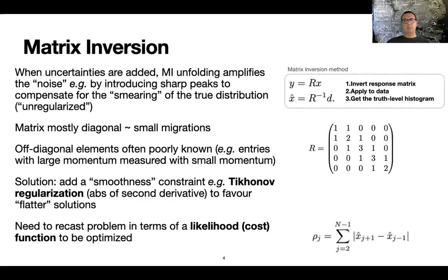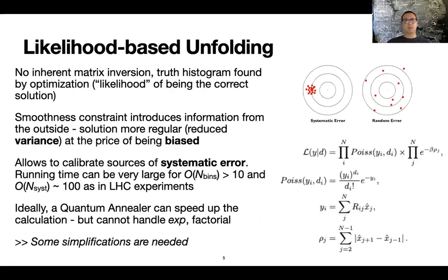So one possible solution is basically to add a regularization term that, for example, can be the absolute value of the second derivative of the solution. So this is called the Tikhonov regularizations. There are also other methods, but this is the most basic one and favorite substantially. So in order to do that, you need to recast the problem into a likelihood or a cost function based problem, and then you can optimize this function. So you understand where this is going.